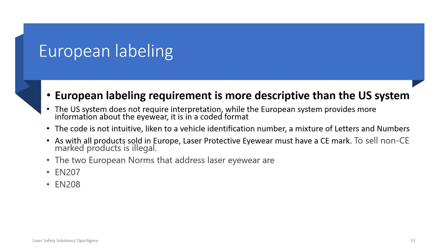European labeling is without a doubt more descriptive and more informative than the U.S. system. The difference is that the U.S. system does not require interpretation, while the European system is based on a code you have to know. It reminds me of a vehicle identification number — if you know the code, you have a wealth of information; if you don't, it's gibberish. No eyewear can be sold in Europe without a CE mark. There are two European norms: EN-207 and EN-208, and we will touch on each.